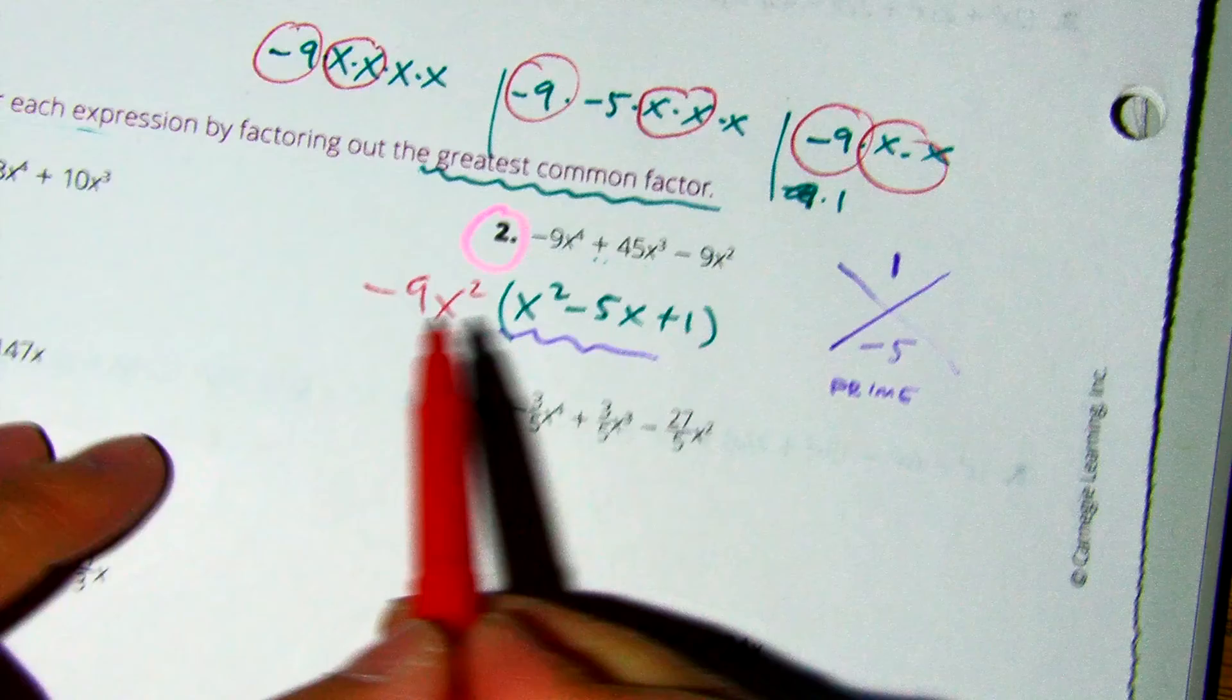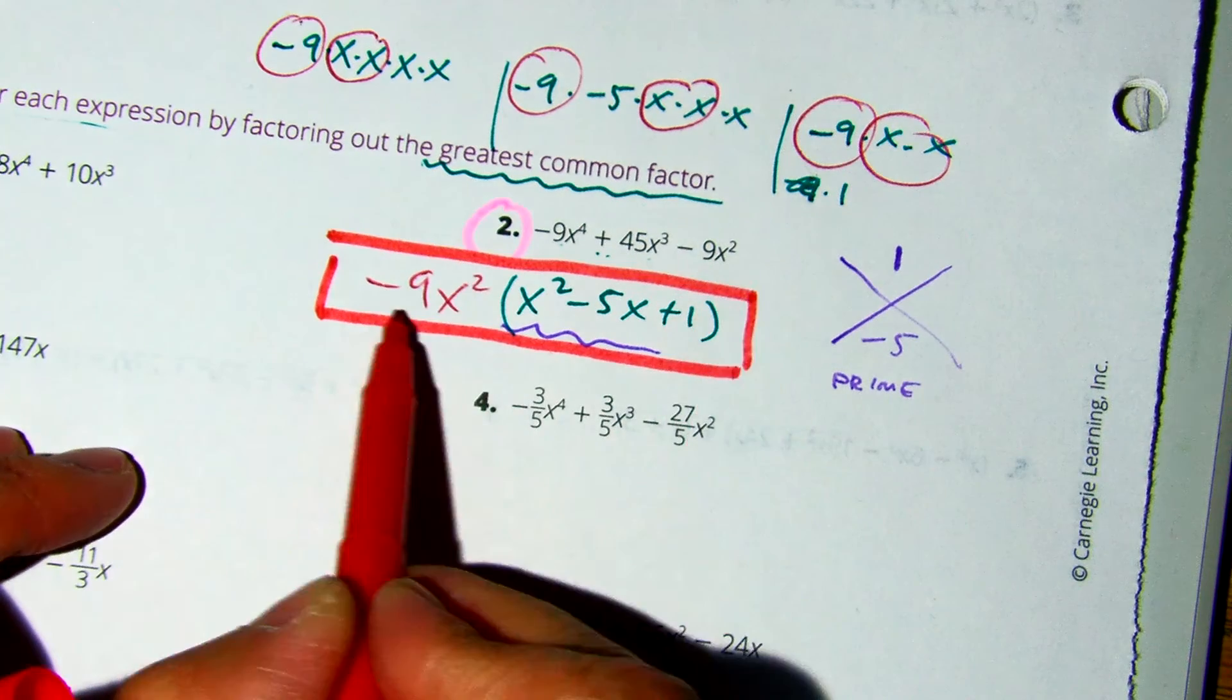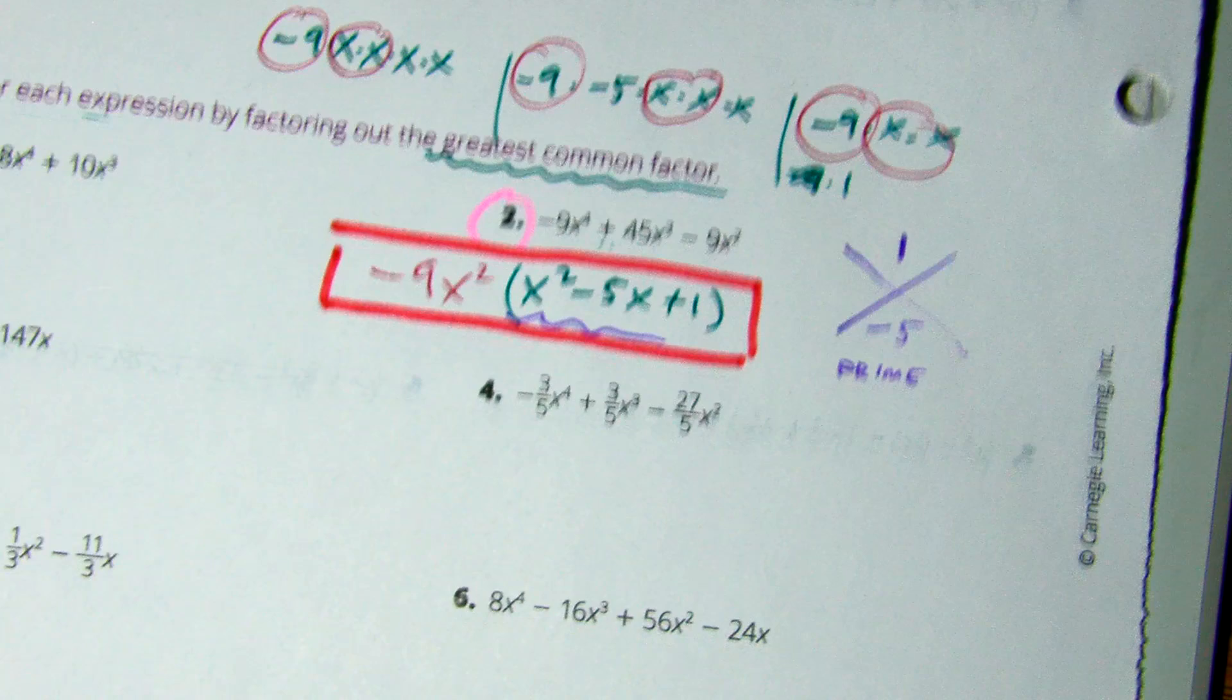So, our answer is just the GCF in this problem. Negative 9x squared times x squared minus 5x plus 1.